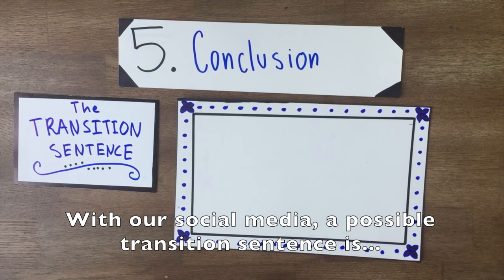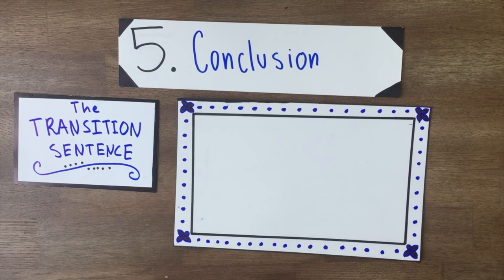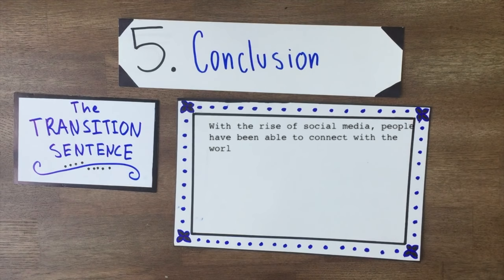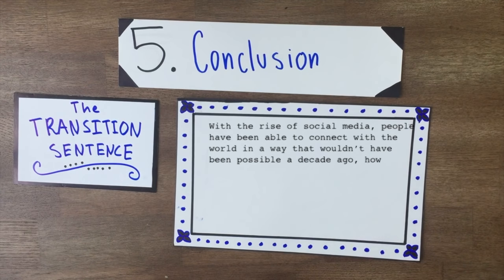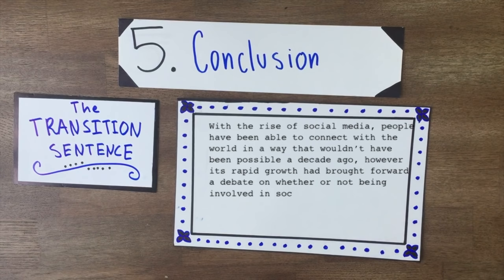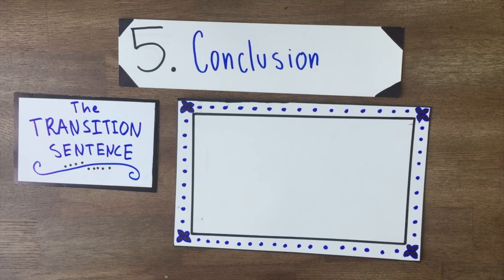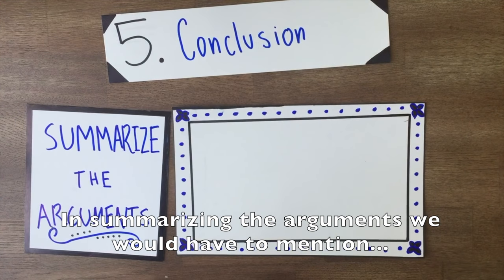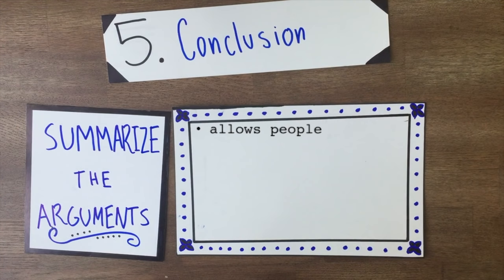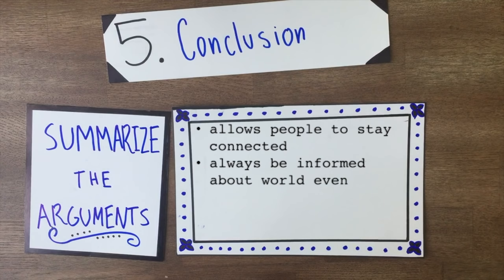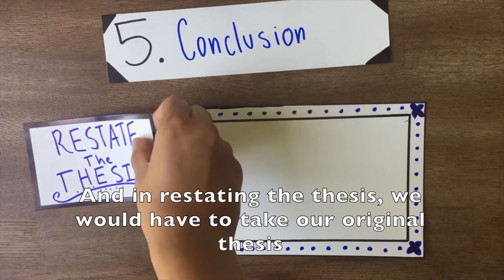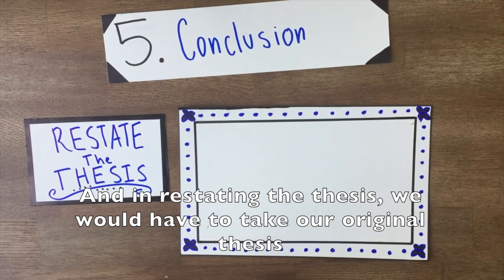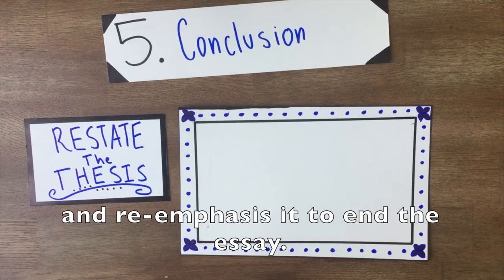With our social media essay, a possible transition sentence is: with the rise of social media, people have been able to connect with the world in a way that wouldn't have been possible a decade ago. However, its rapid growth has brought forward a debate on whether or not being involved in social media is healthy in our everyday lives. In summarizing the arguments, we'd have to mention that social media allows people to stay connected, always be informed about world events, and work creatively online. And in restating the thesis, we'd have to take our original thesis and reemphasize it to end the essay.